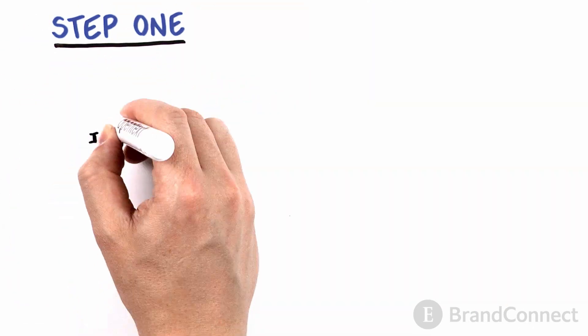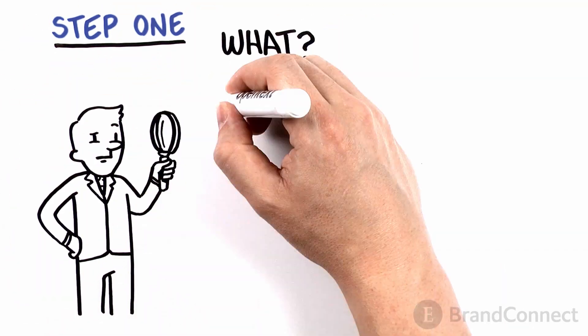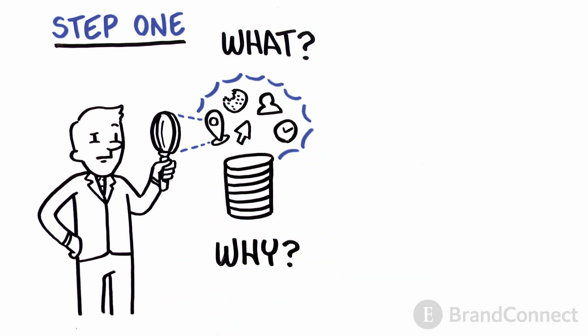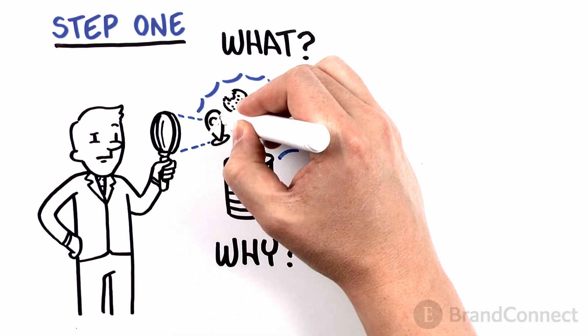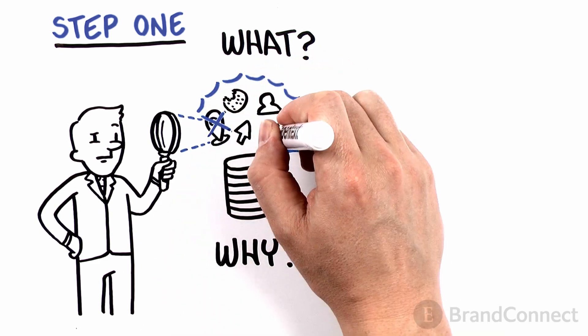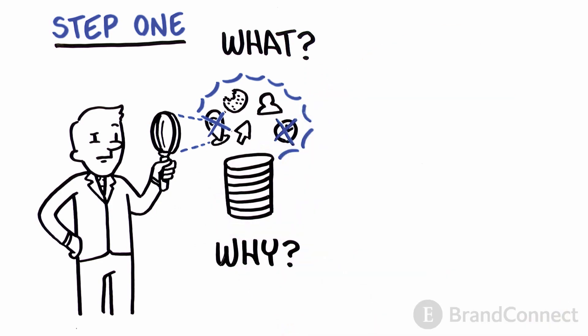The first step is to figure out what personal data you collect and hold, and why you need it. You may need to redesign your processes, so you don't gather any more personal data than is strictly necessary.